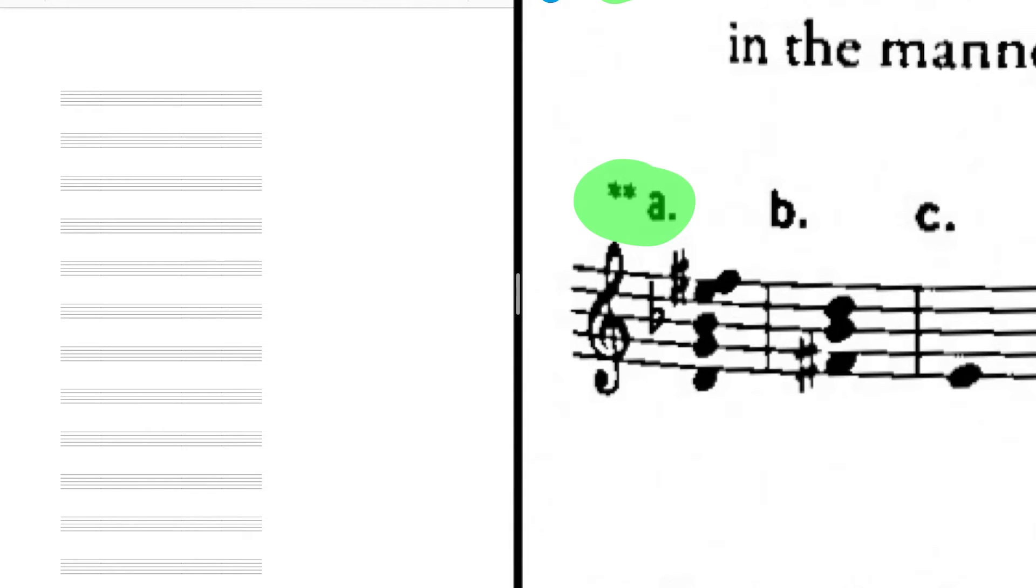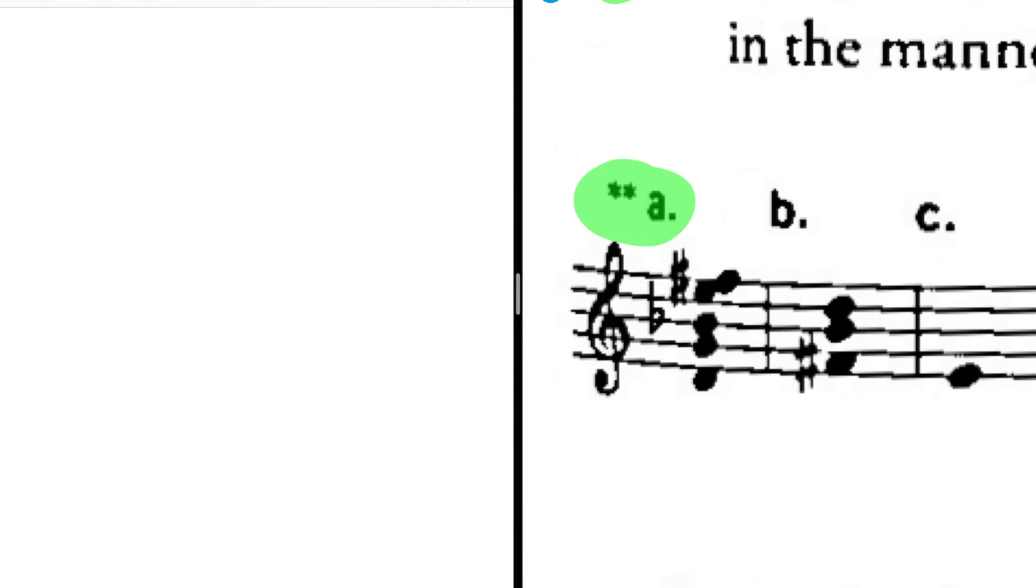So step one to figuring this out would be getting all these pitches within an octave. So I'm going to do this with arithmetic first. So to get these within an octave, I'm going to flip these E and F sharp notes down an octave so that we have D which is 2, E 4, F sharp 6, G 7, and B flat 10. Now we're all within an octave.